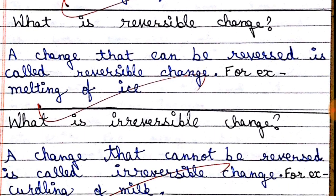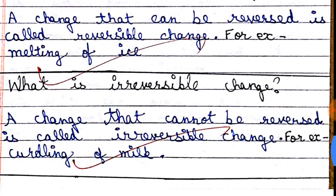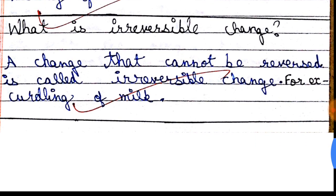Next question: what is a reversible change? A change that can be reversed is called a reversible change. For example, melting of ice — ice melts, but if you put it back in the freezer it becomes ice again. So this is a reversible change. Next: what is an irreversible change? A change that cannot be reversed is called an irreversible change.